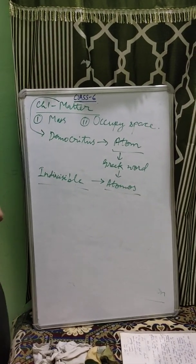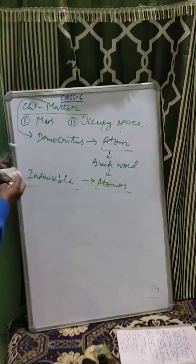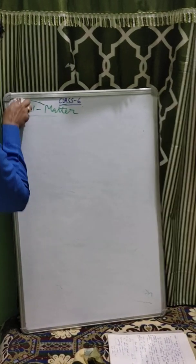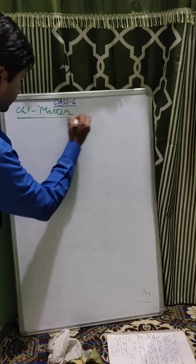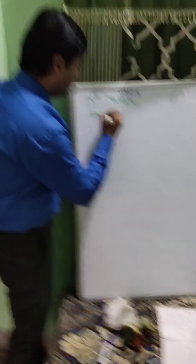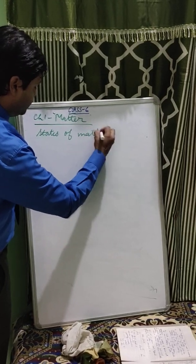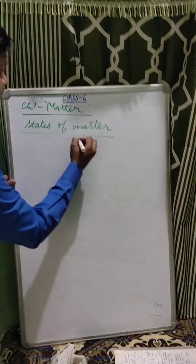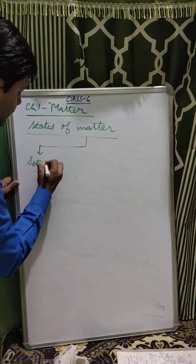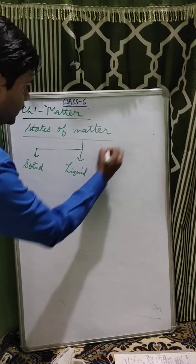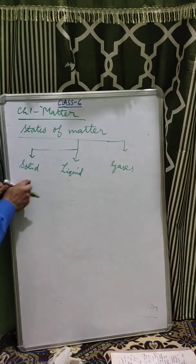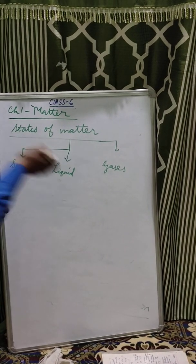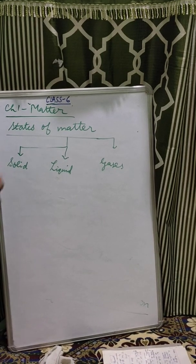Now, let us learn about the different forms of matter — the States of Matter. Matter can be classified into three states. What are they? Number one: Solid. Number two: Liquid. And number three: Gas. These are the three states of matter. Now, we are going to study about solids, liquids, and gases in detail — their properties and examples.